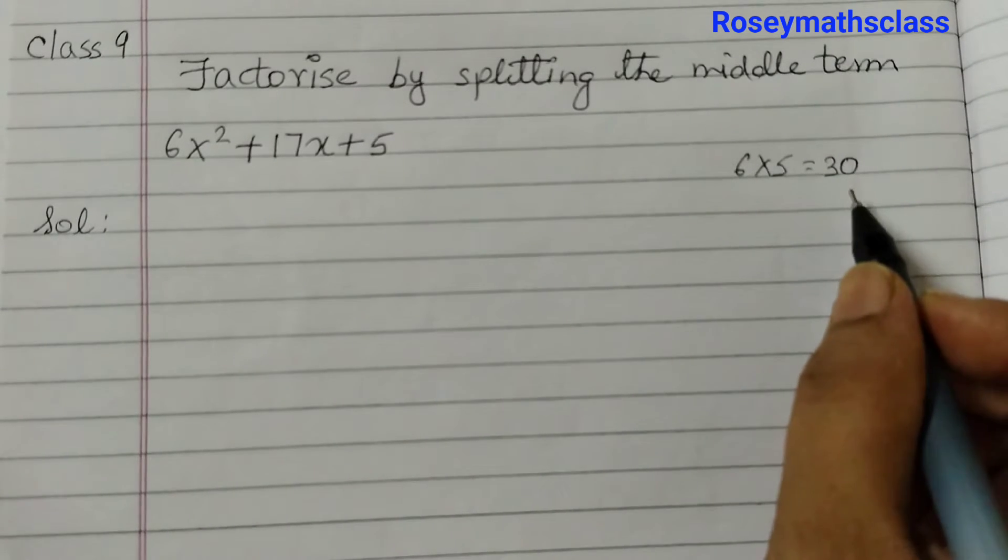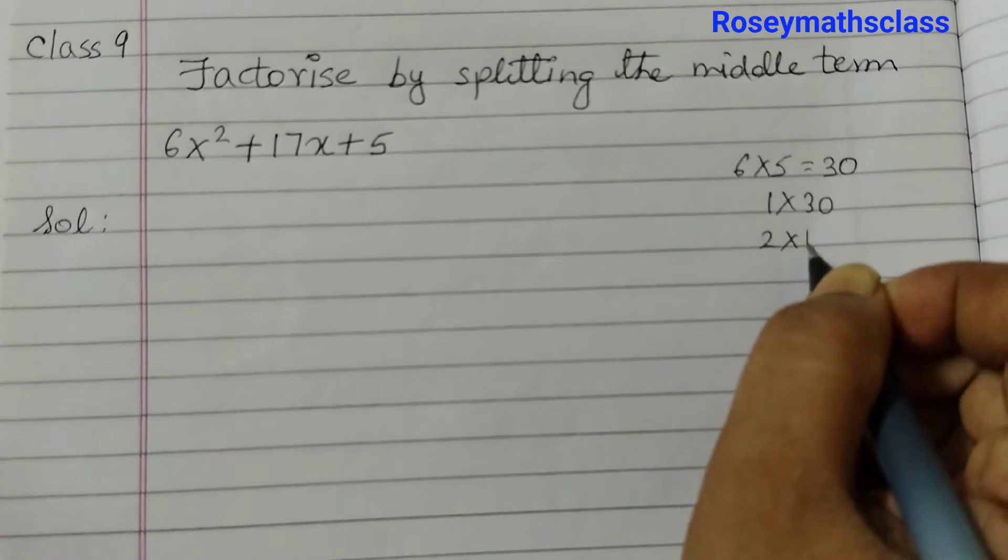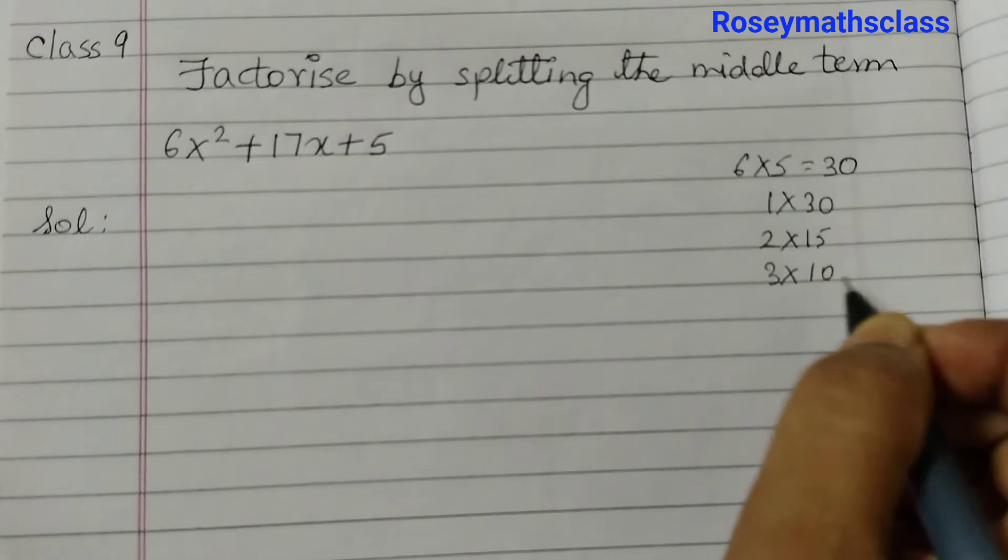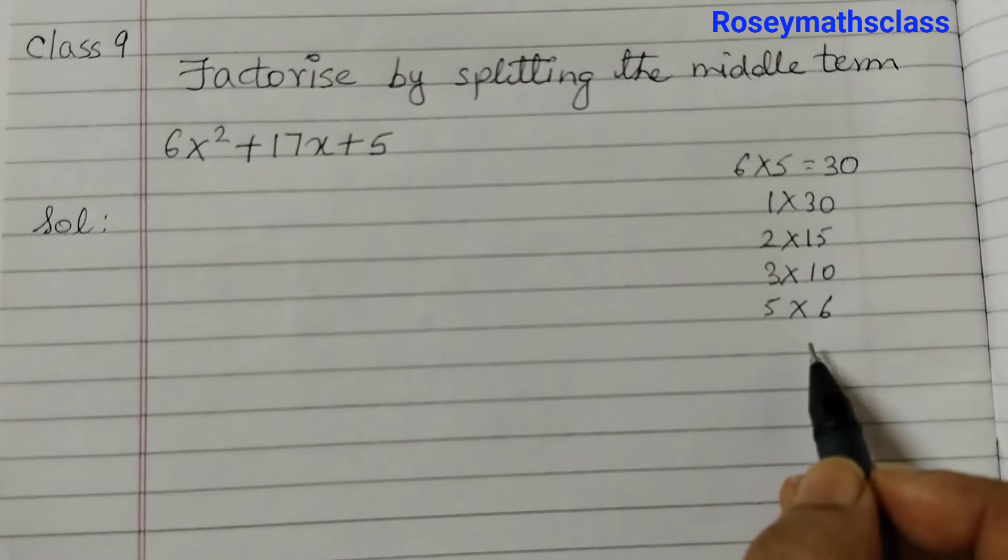Now find out the factors of 30. So that's 1 into 30, 2 into 15, 3 into 10, 5 into 6. These are the factors of 30.